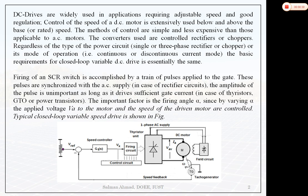Here you can see we have one DC motor and the armature is fed from a controlled rectifier if the supply is AC. If the supply is DC, we can use DC-DC converters to regulate the armature voltage. Similarly, the field circuit is also fed from the controlled rectifier — this can be fed from an uncontrolled or controlled rectifier. We sense the speed with the help of a tacho generator.